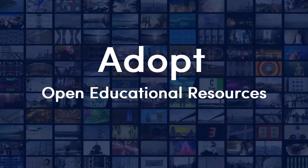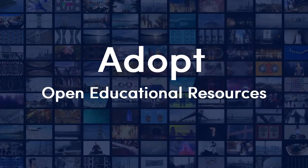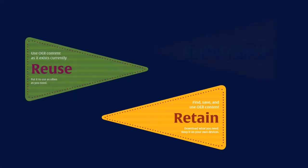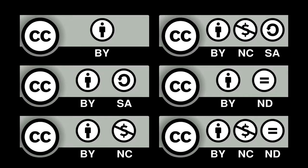Adopt OER. Let's say you found a resource developed by someone else and it suits your objectives perfectly. You would like to start using it right away and you don't want to change a thing. You want to retain, reuse, and redistribute the work. All licenses require that you credit the original creator. With CC by Attribution, that is all that is required of you, so it is the most open of all the licenses.